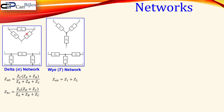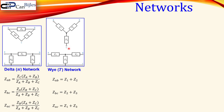Looking at nodes B and C in the delta, ZA is in parallel with ZB and ZC in series. The formula again has the summation in the denominator. For the Y network between B and C, that's just Z2 plus Z3. The final pair is A and C: in the delta, ZB is in parallel with the series combination of ZA and ZC. For the Y connection between nodes A and C, that's just Z1 plus Z3.